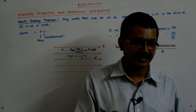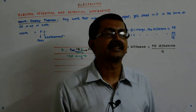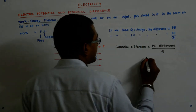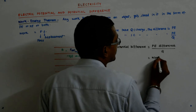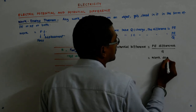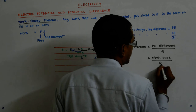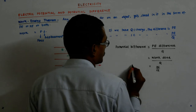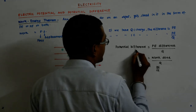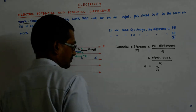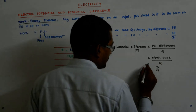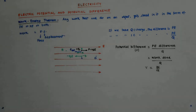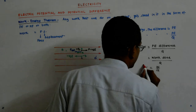Potential difference is nothing but potential energy difference, which is nothing but the work done in getting the charge from one point to another. So I'll say this is equal to work done divided by Q — that is W upon Q. For potential difference, I give it a specific name called V.